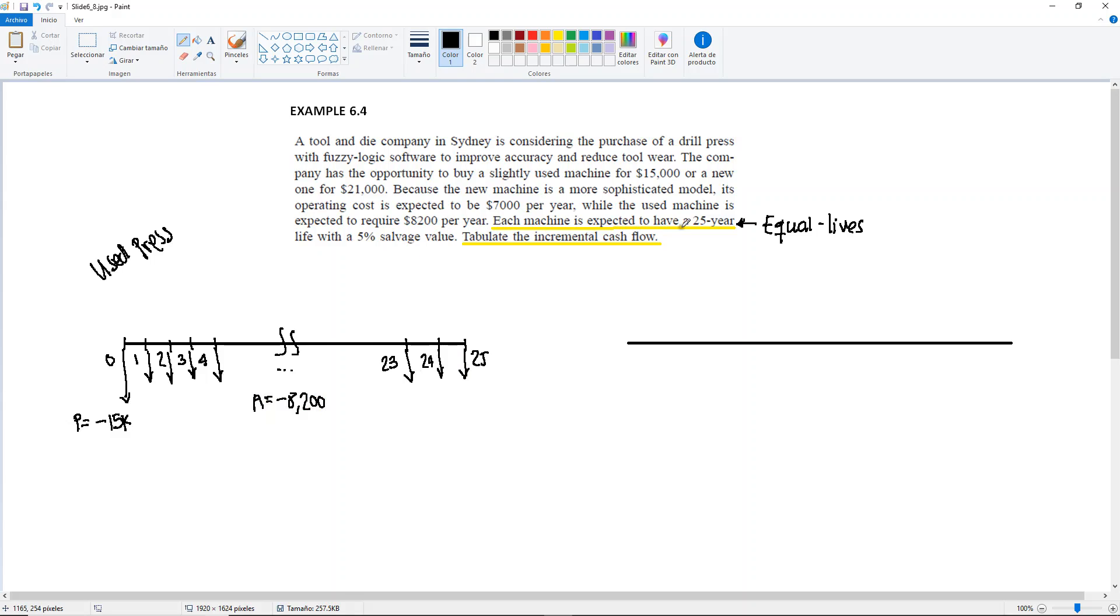Then it says that after the 25 years, there's going to be a 5% salvage value. They don't actually give you the amount for the salvage value, you have to calculate it. In this case, the salvage value will be equal to the $15,000 times 0.05, which is going to give us $750.